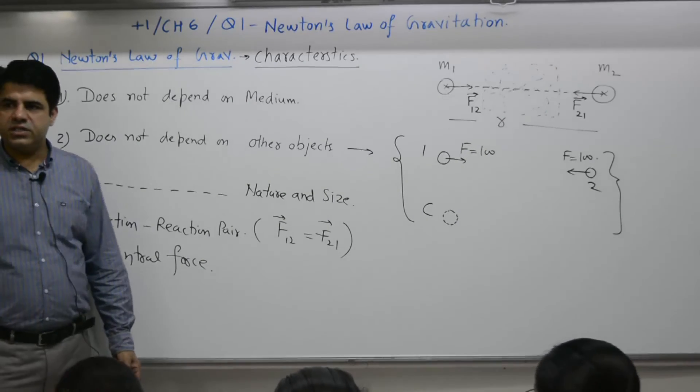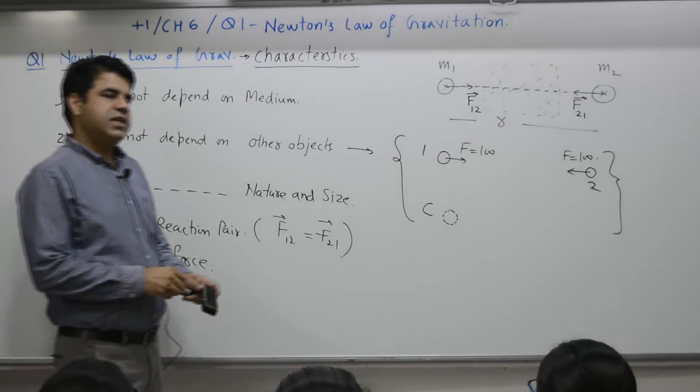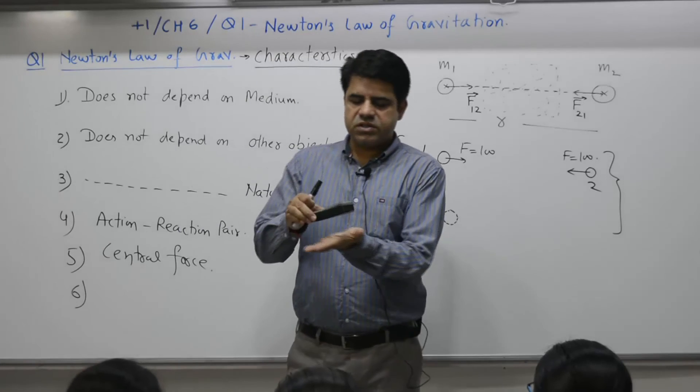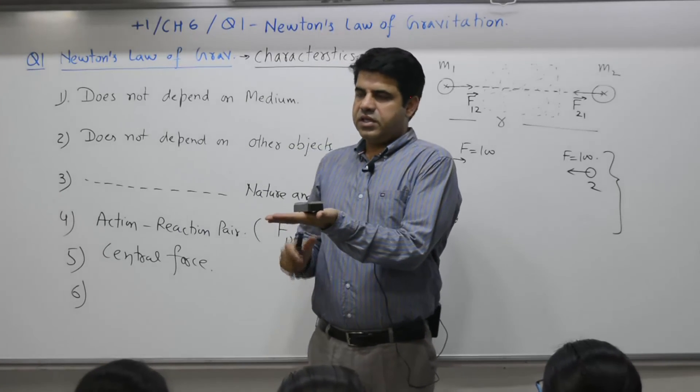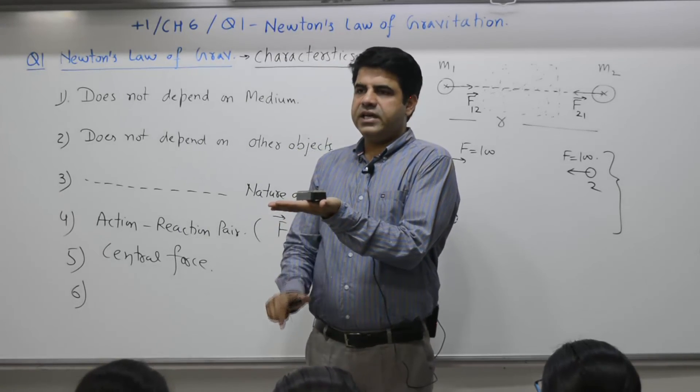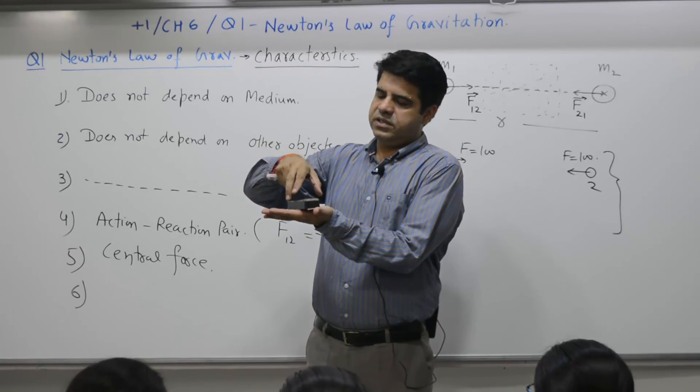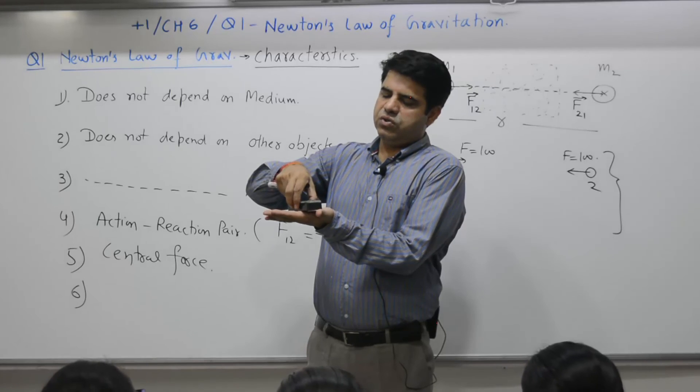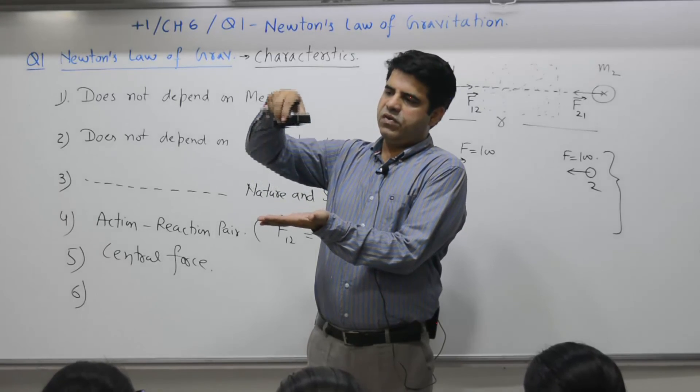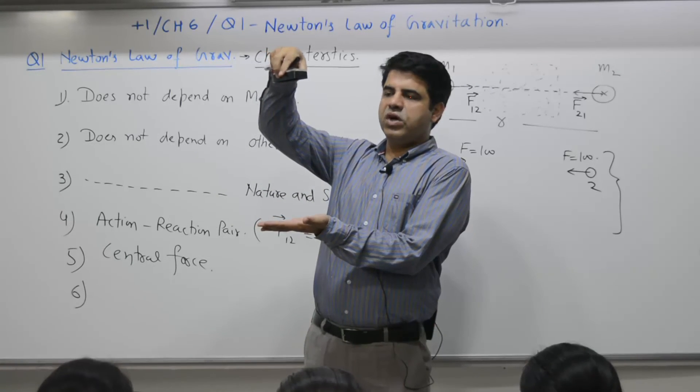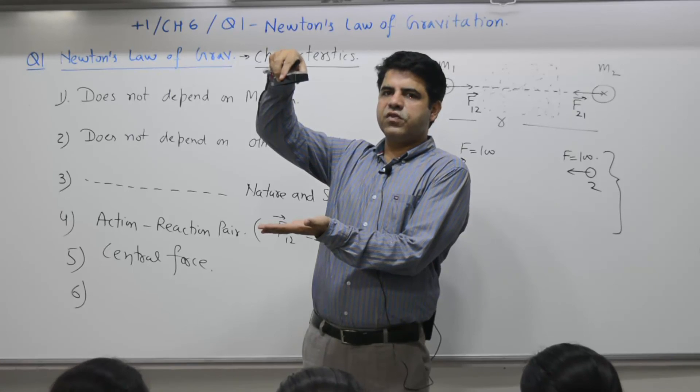What type of force it is? Conservative. There is an object on the surface of earth, there is a force of attraction between this object and earth, how much force? M into G, weight. So you lift this object from one level to other, you have done work against the gravitational force.